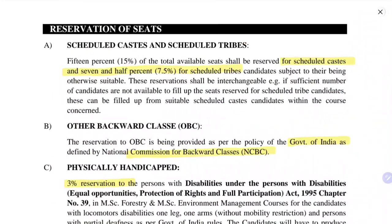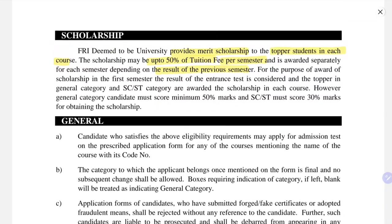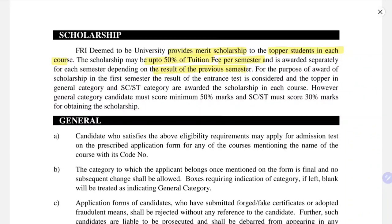FRI University provides merit scholarships to top students in each course. The scholarship may be up to 50% of the tuition fee per semester and is awarded separately for each semester depending on the result of the previous semester. So if you are a bright student and work hard, you can reduce your tuition fee by about 50%. For the first semester, the result of the entrance test is considered. Toppers in the general category and SC/ST category are awarded the scholarship in each course, provided the general category candidate scores a minimum 50% and SC/ST candidates score 30%.